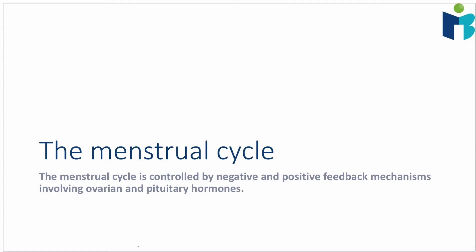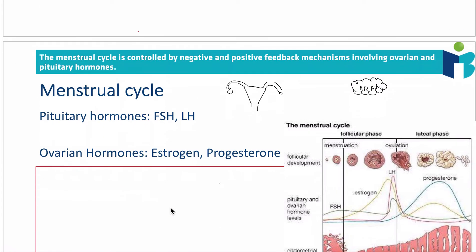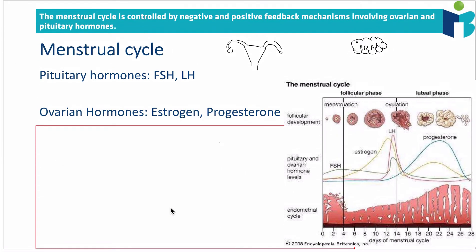In this video we're going to talk about the menstrual cycle, which is a cycle of hormones that begins in females at puberty. We're going to talk about how it relates to negative and positive feedback mechanisms involving ovarian and pituitary hormones. The pituitary hormones come from the pituitary gland in the brain, whereas the ovarian hormones come from the ovaries, which are attached to the fallopian tube.